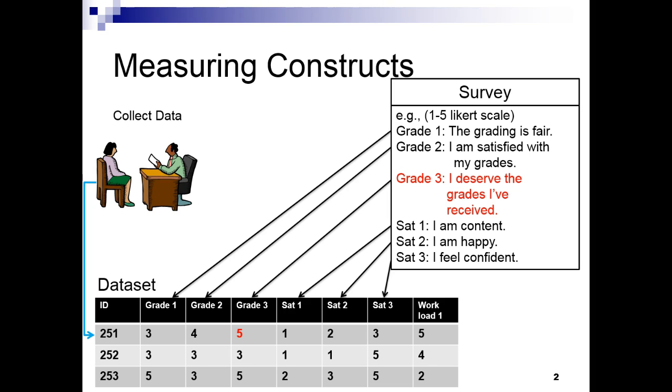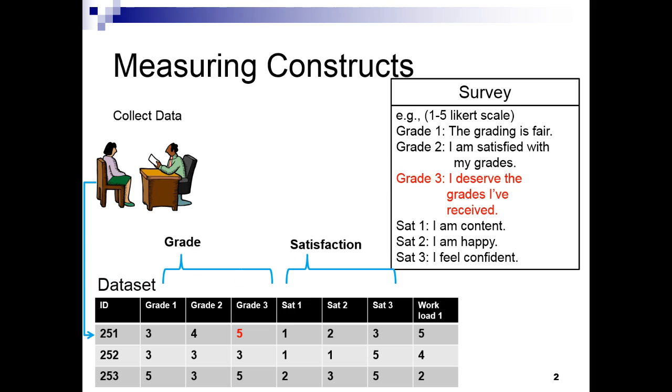So, participant number 251 responded with a value of 5 for the item called grade 3. This means that participant number 251 strongly agrees that she deserves the grade she received. The set of items from our survey now entered as columns in our dataset together measure the constructs we are interested in. For example, grade 1, 2, and 3 comprise the construct called grade.